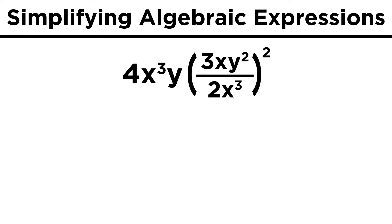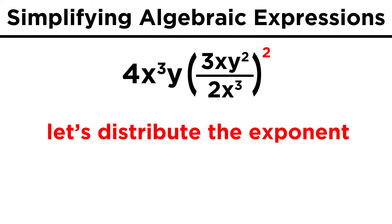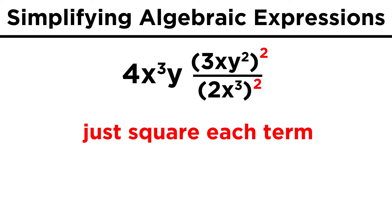Let's try a trickier one. We have four x cubed y times this fraction in parentheses, three x y squared over two x cubed, all of which is squared. The first thing we want to do is distribute this exponent over everything in the fraction. If the whole term is squared, then each individual term can be squared. Three x y squared becomes nine x squared y to the fourth, and two x cubed becomes four x to the sixth.